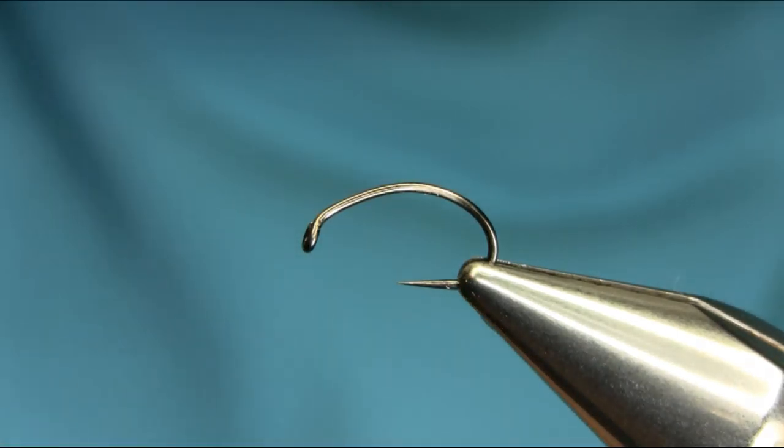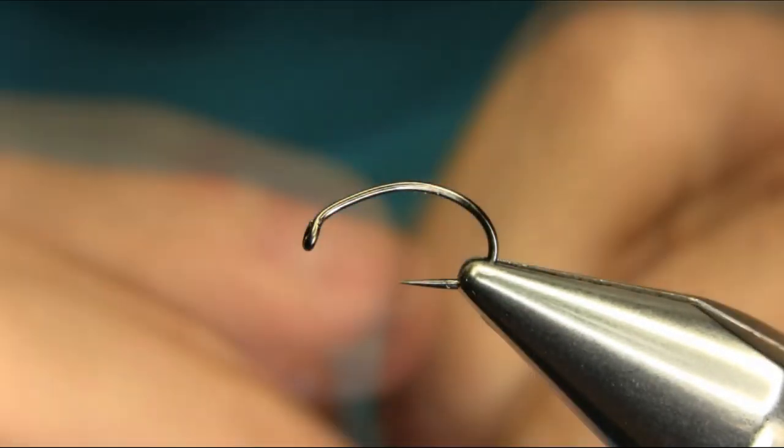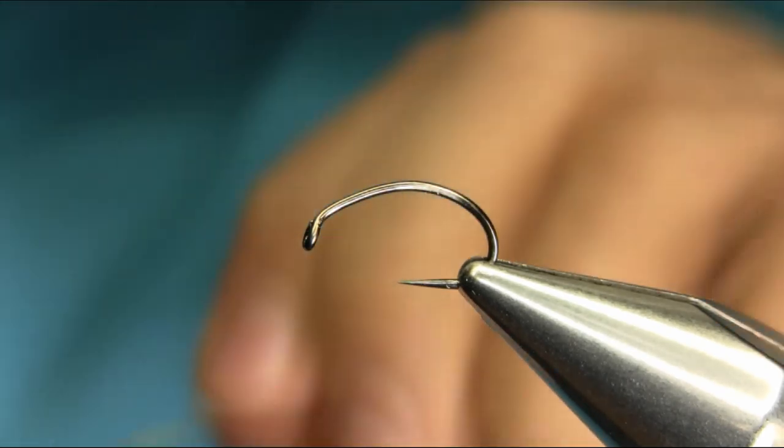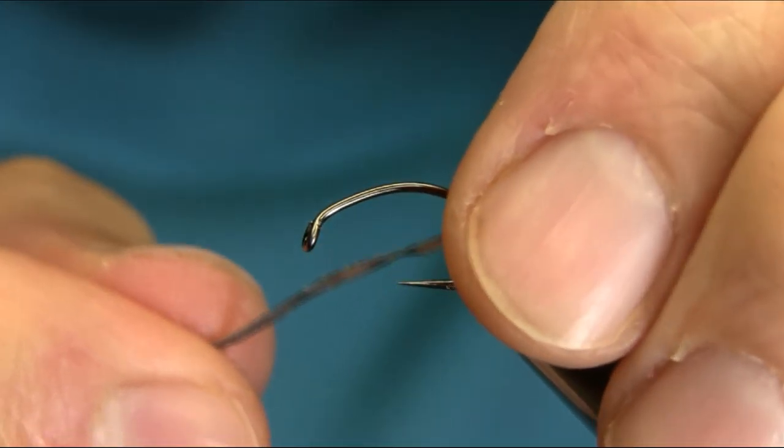Hi everyone, this is a size 10 barbless hook and this is a Czech nymph fork actually. So I'm gonna explain everything as I go along.